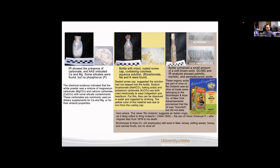For our first one, we have this bottle that contained this white powdery material. Infrared spectroscopy showed the presence of carbonates in here and atomic absorption spectroscopy indicated both calcium and magnesium. There are some silicates in there, but there was no phosphorus. Chemical evidence indicated that the white powder was a mixture of magnesium carbonate and calcium carbonate, and it had some silicate contaminants in there that have likely leaked into the bottle over the years. These carbonates are commonly used as dietary supplements for both the calcium and magnesium or for their antacid properties.